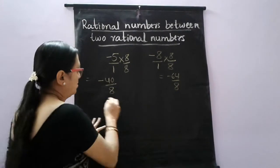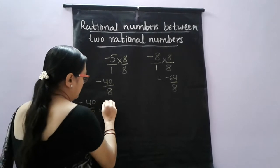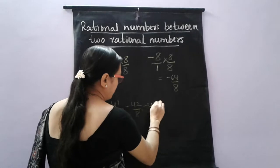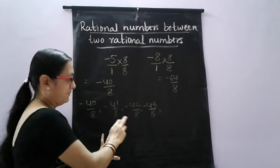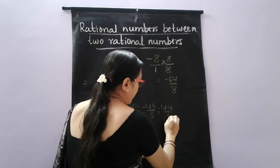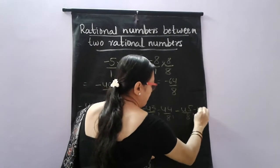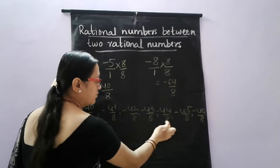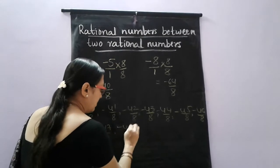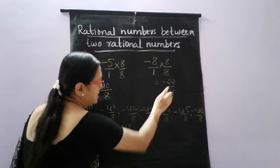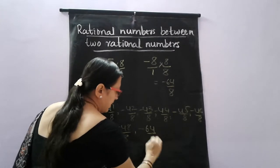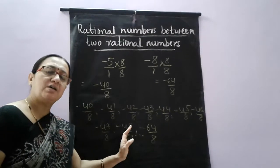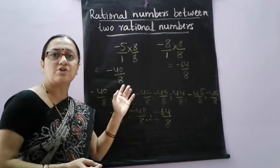Between minus 40 by 8 and minus 64 by 8, which are the numbers? Minus 41 by 8, minus 42 by 8, minus 43 by 8, minus 44 by 8, minus 45 by 8, minus 46 by 8, minus 47 by 8 — that is 7 numbers — and minus 48 by 8. So we got 8 rational numbers; the last number reaches minus 64 by 8. There are still many more. We will get as many rational numbers as we want between any two rational numbers.